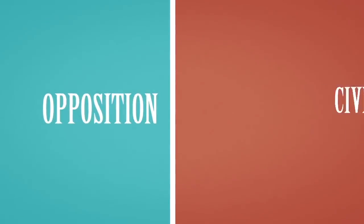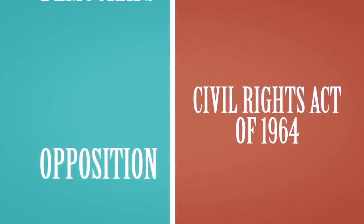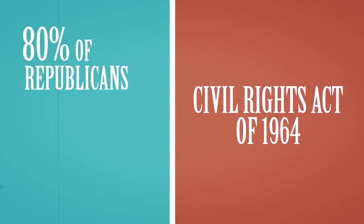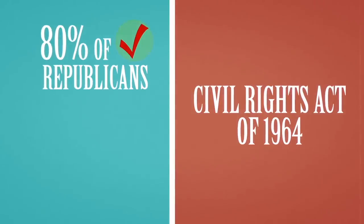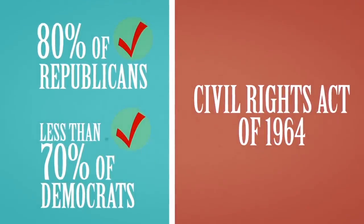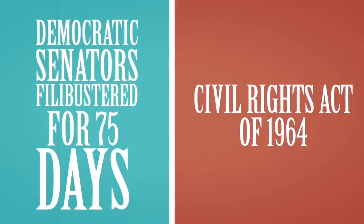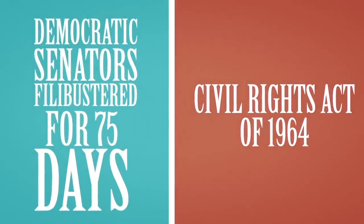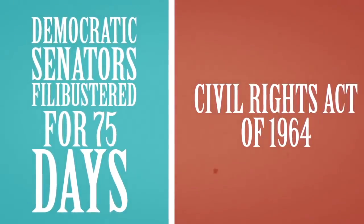A few decades later, the only serious congressional opposition to the landmark Civil Rights Act of 1964 came from Democrats. Eighty percent of Republicans in Congress supported the bill. Less than 70 percent of Democrats did. Democratic senators filibustered the bill for 75 days until Republicans mustered the few extra votes needed to break the logjam.